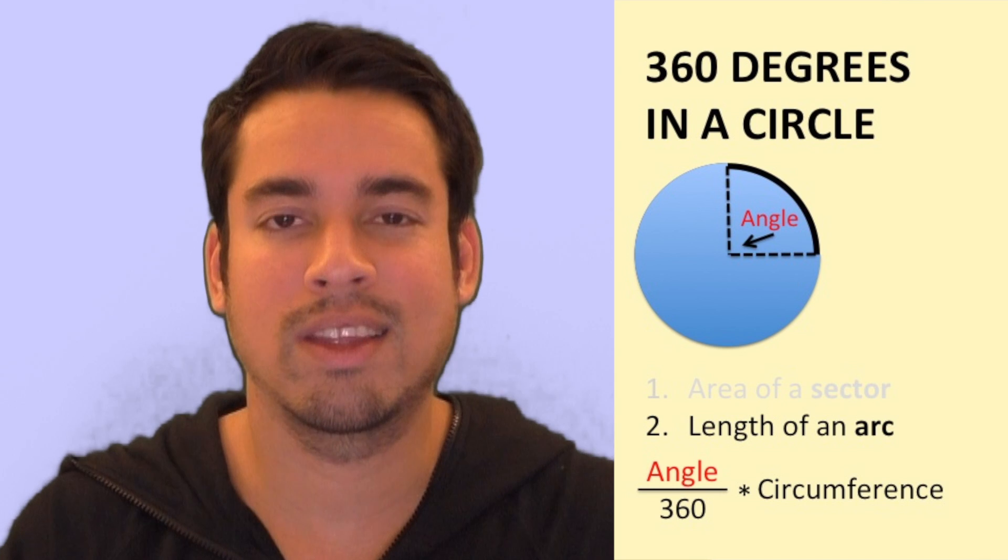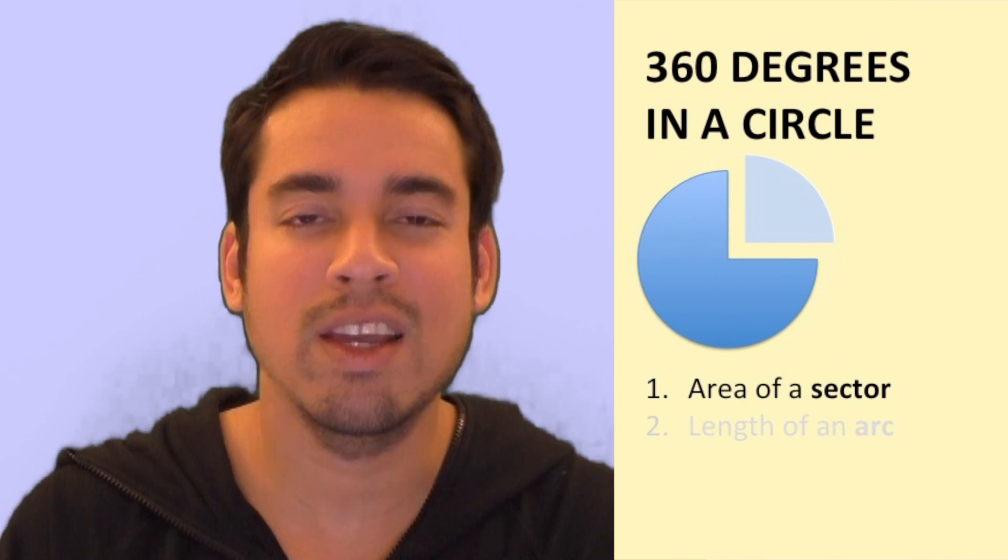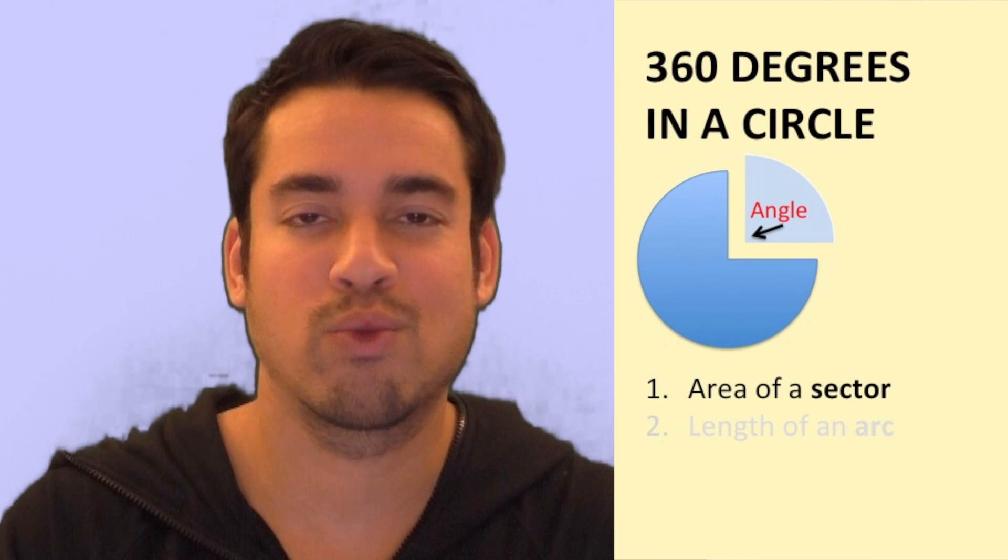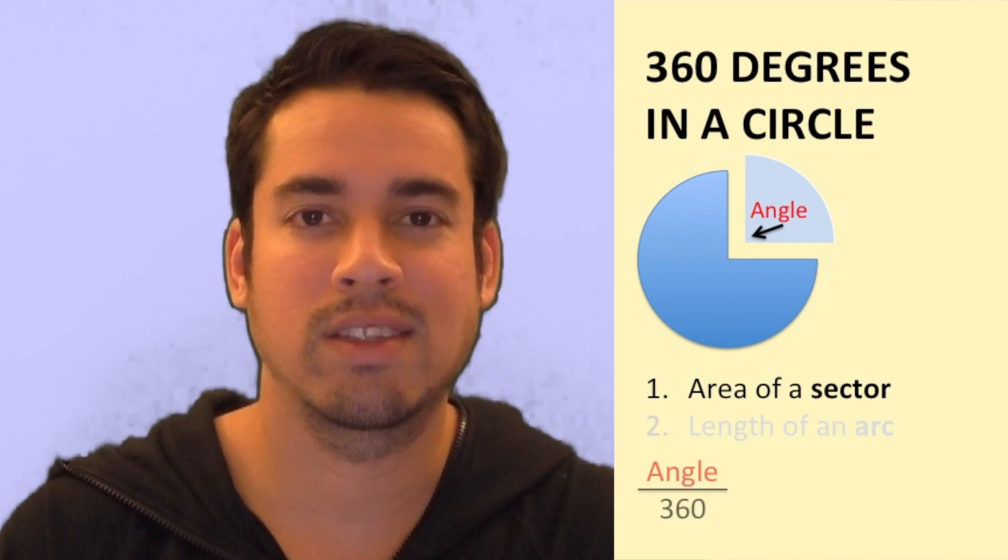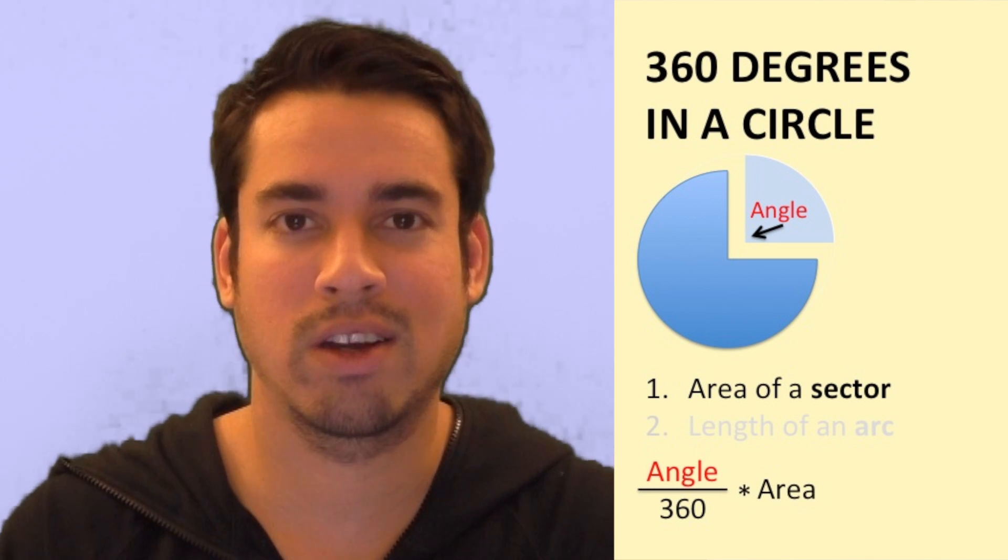Likewise, if you're trying to calculate the area of a sector, if you again know that angle, you simply take the ratio of that angle over 360 times the total area of the circle.